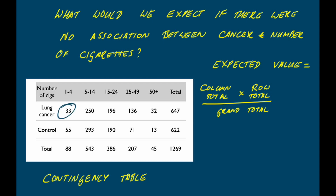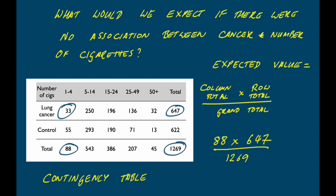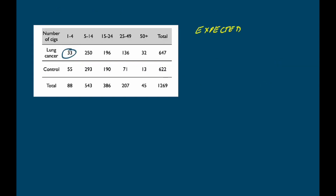So for our top-left cell — where we have 33 lung cancer cases in the one-to-four cigarettes per day category — the expected value is the column total of 88 multiplied by the row total of 647, divided by the grand total of 1269. So our expected value is 44.87 for that particular cell. Just looking at that expected value and the observed value, we can see that we've got rather fewer lung cancer patients in that cell than we would expect were there no relationship between our two variables. The observed minus the expected is minus 11.87, telling us the observed value is rather smaller than expected.